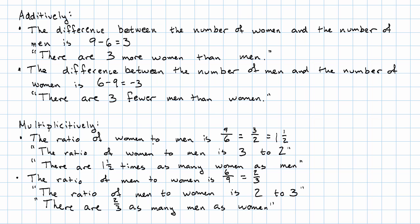Or we could just say there are two thirds as many men as women. When we're talking about a fraction, we don't typically say times, we just say two thirds as many. When we're talking about a whole number or mixed number, we say times — one and a half times.